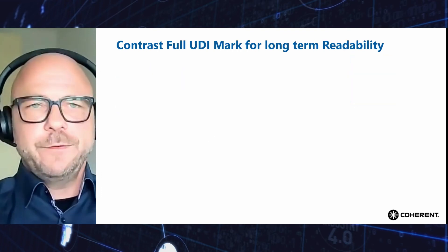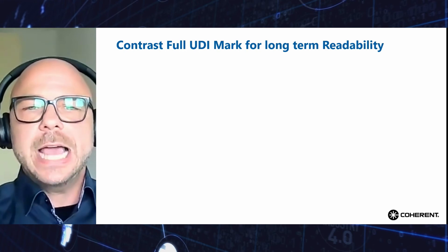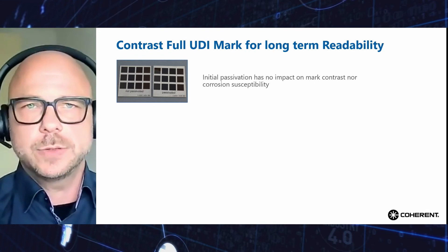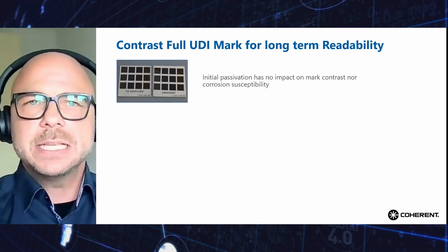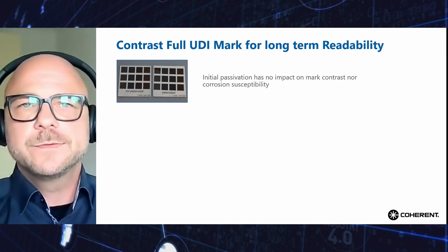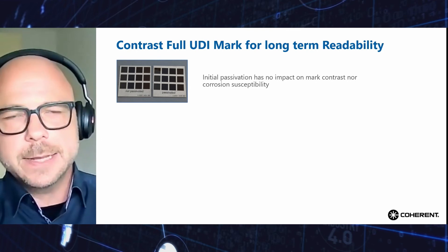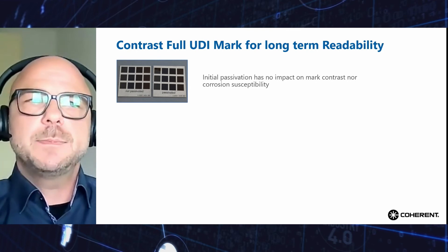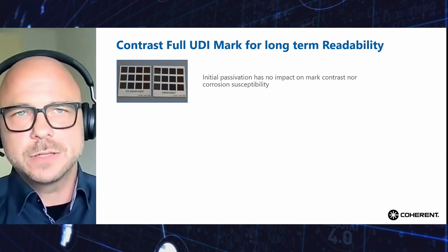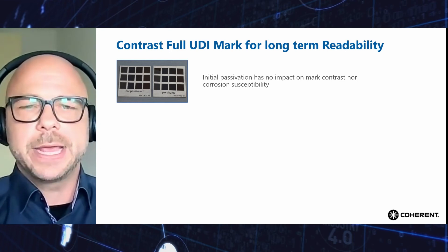What does this mean for readability? Passivation is a subject. Passivation is a process which protects parts from corrosion. Passivation can take place before the marking is applied, after marking is applied, or for reasons unrelated to the marking itself — such as welding or other mechanical treatments.